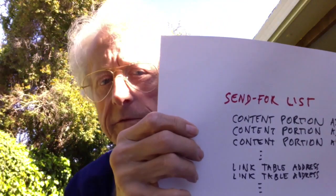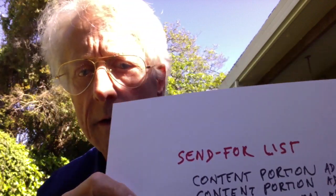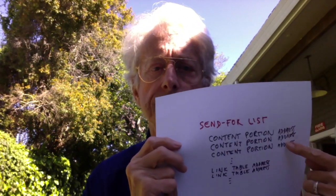So for now, please forget about the web. I'll talk about the compatibility problems in another video. What's the alternative to lump files? Instead of a lump file with all the content and connection inside the lump, we send a file that is a list of text content to send for and links to send for — a send-for list. The content portion addresses and link addresses. The contents are portions of text which can be anywhere on the internet. The links are tables which can be anywhere on the internet, and we leave it to your viewing machine to send for them because they can come from all over.